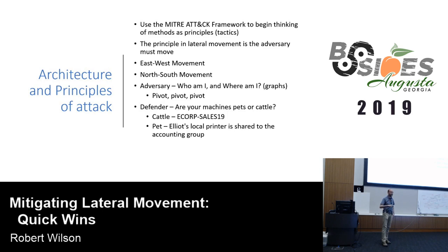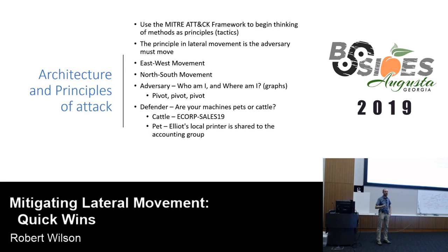Getting back to the ATT&CK framework and thinking of stuff as principles: the principle in lateral movement is adversary movement. You have east-west movement — workstations talking to other workstations — and north-south movement, which would be going out of a workstation subnet into a server subnet. From an adversary's perspective, they're always wanting to know who they are and where they are. This is the idea that attackers work in graphs and defenders work in lists — a concept that came out a few years ago from Microsoft. Adversaries need to pivot to get to other machines.